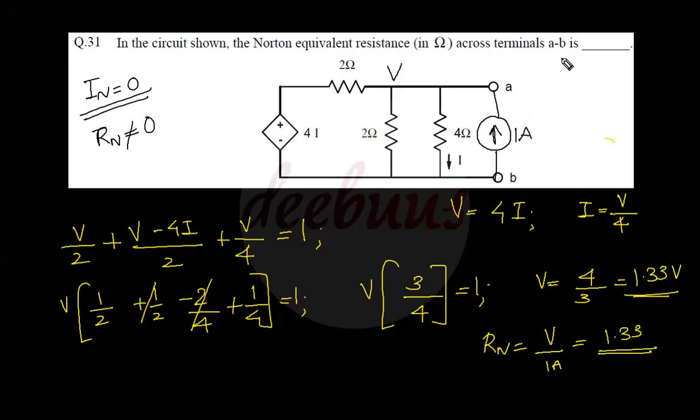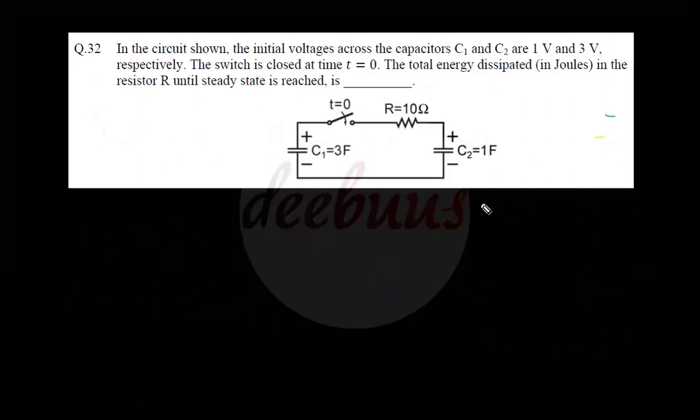Since Norton's resistance RN equals voltage divided by applied current (1 ampere), and voltage is 1.33 volts, Norton's resistance is 1.33 ohms.